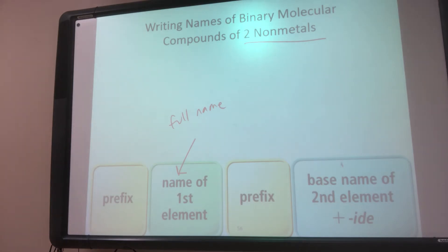The second element that's written, it's going to be the name and then the ending -ide. This is where we're going to shorten the element name and add the -ide.